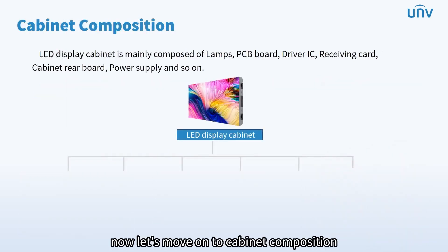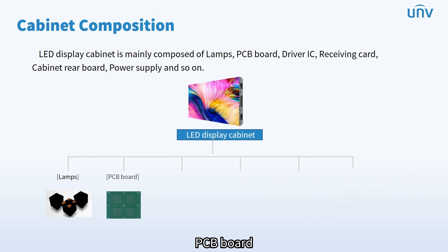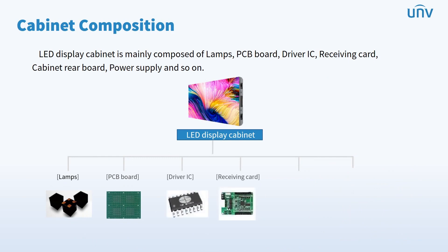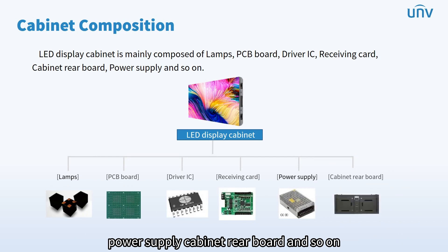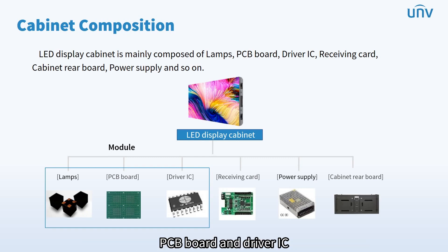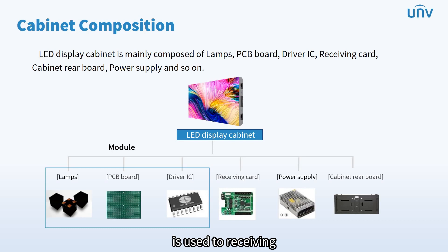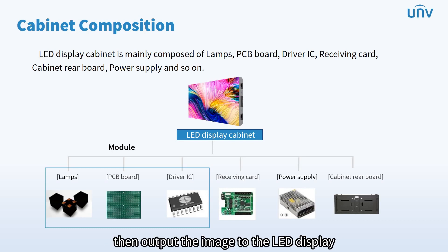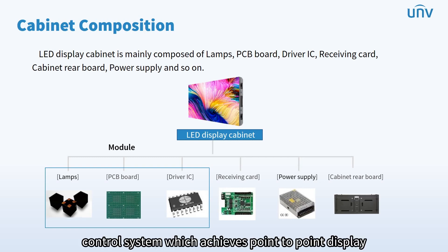Now let's move on to cabinet composition. LED display cabinet is mainly composed of lamps, PCB board, driver IC, receiving card, power supply, cabinet rear board, and so on. Each module mainly consists of constant LED lamps, PCB board, and driver IC. The receiving card is used to receive and convert the data from the sending card, then output the image to the LED display. It is a very important part of the LED control system, which achieves point-to-point display.